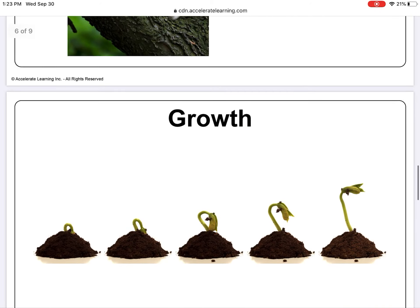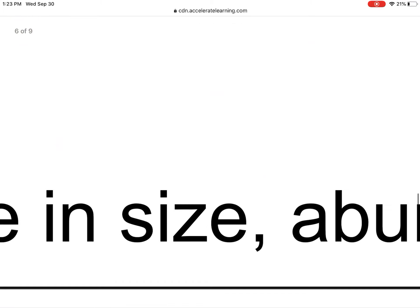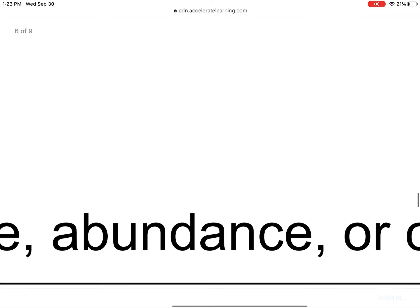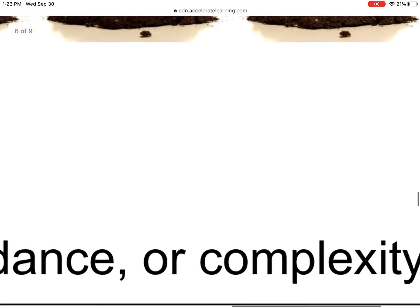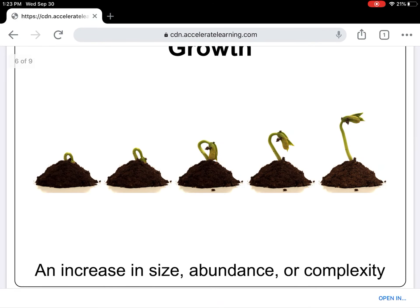Your next word is growth. G-R-O-W-T-H. Growth is an increase in size, abundance, or complexity. Size you know what that means; abundance means how many there are; and complexity means how detailed it is. Plant growth can continue throughout the plant's life.